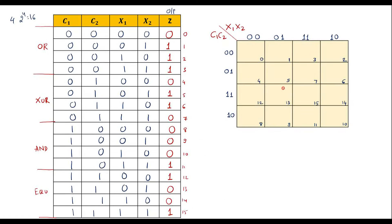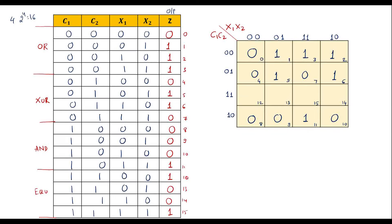Let me write the values in the K-map: cell 0 = 0, cell 1 = 1, cell 2 = 1, cell 3 = 1, cell 4 = 0, cell 5 = 1, cell 6 = 1, cell 7 = 0, cell 8 = 0, cell 9 = 0, cell 10 = 0, cell 11 = 1, cell 12 = 1, cell 13 = 0, cell 14 = 0, cell 15 = 1.